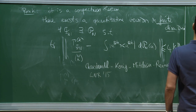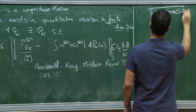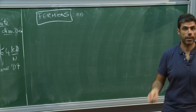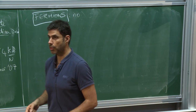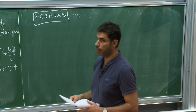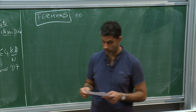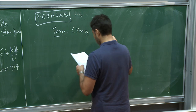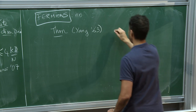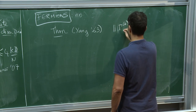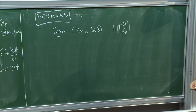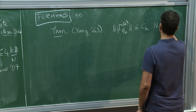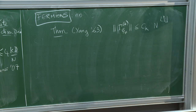Now some words about fermions. For fermions, the answer is no — the density matrices can never have an eigenvalue of order N^k. There is a theorem by Yang in 1963, which says that the norm of γ_k — meaning the largest possible eigenvalue — is at most a universal constant C_k times N^{k/2}. So if k equals 1, γ is bounded. If k equals 2, you get N. If k equals 3, you get N^{3/2}.